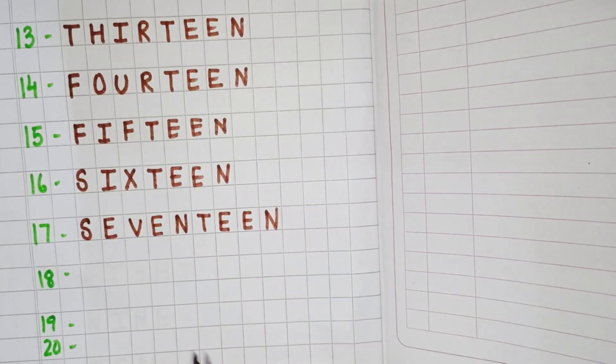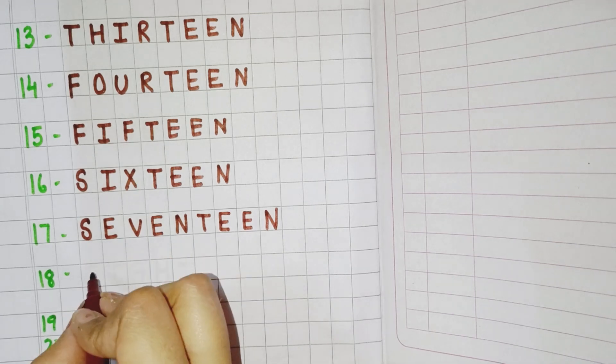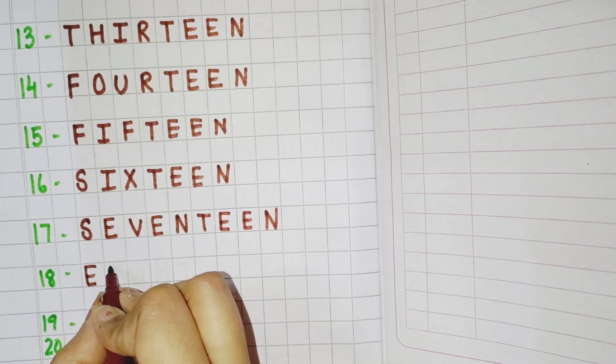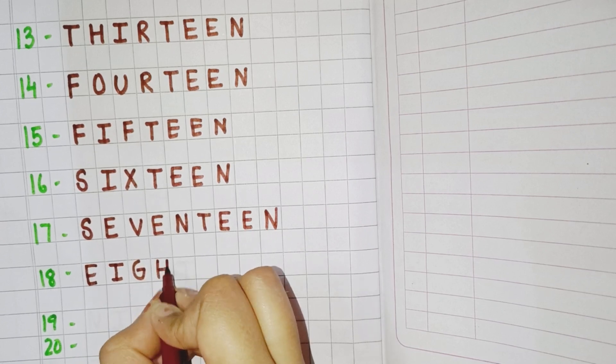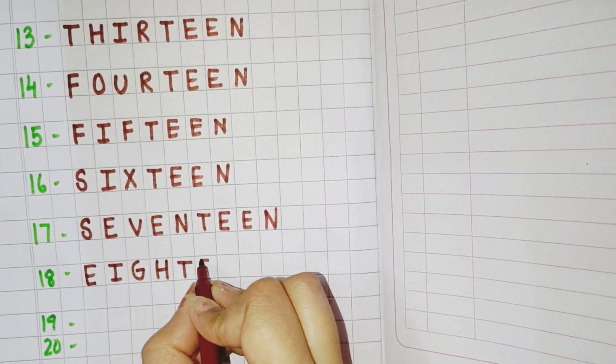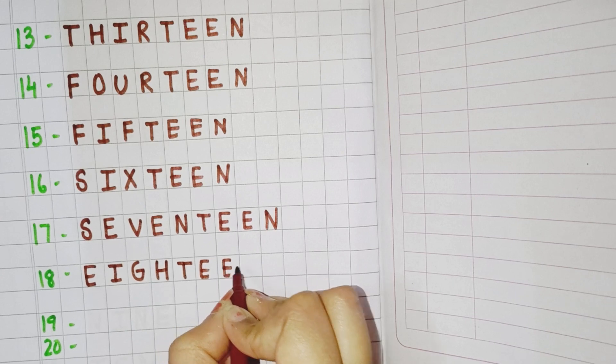Now next is 18. So you will write E, I, G, H, T, double E, N. Eighteen.